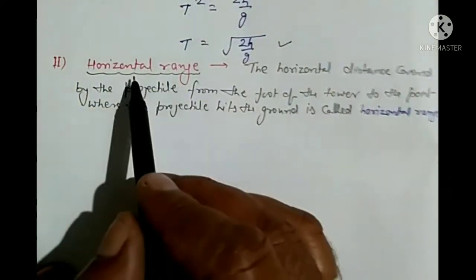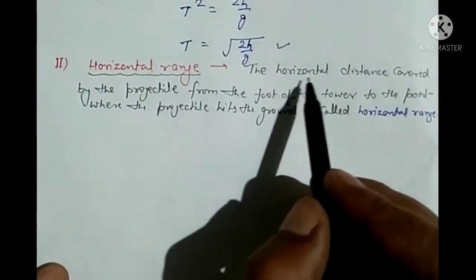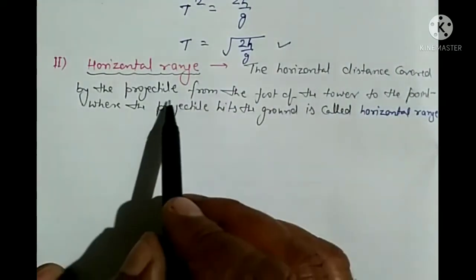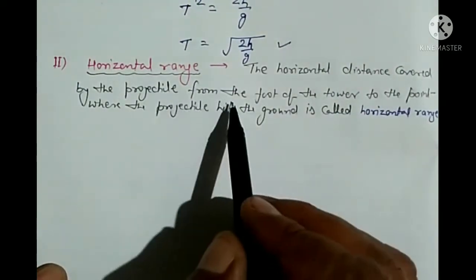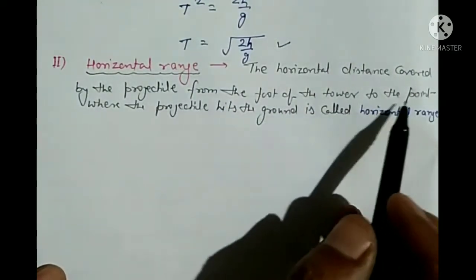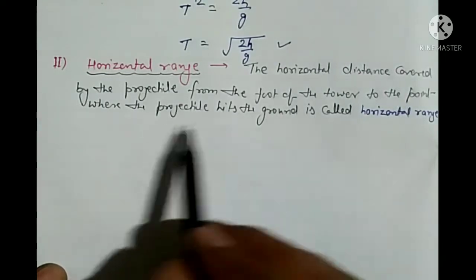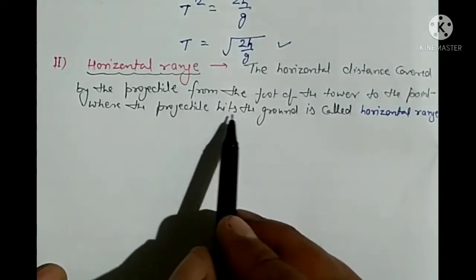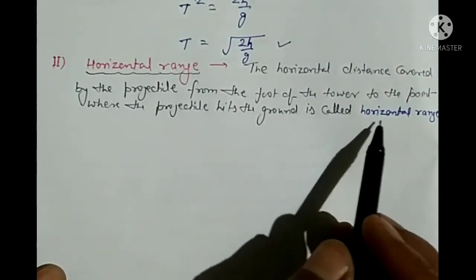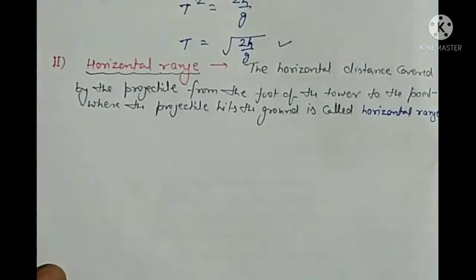Second: horizontal range. The horizontal distance covered by the projectile from the foot of the tower to the point where the projectile hits the ground is called horizontal range.